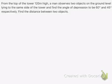Let's solve this question from height and distance. From the top of a tower 120 meters high, a man observes two objects on the ground level lying to the same side of the tower, and finds the angle of depression to be 60 degrees and 45 degrees respectively.